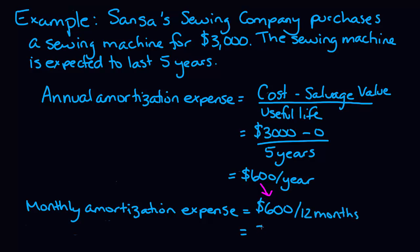Now in order to do the journal entry, you have to figure out whether we're doing amortization for one month, for one year, or for a portion of the year. Every single month, the amortization expense of $50 will be recorded, and the journal entry is going to look exactly the same every single month.